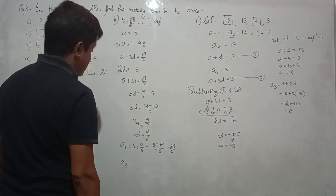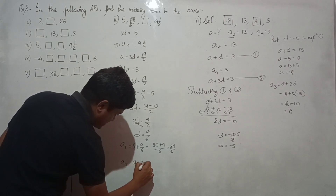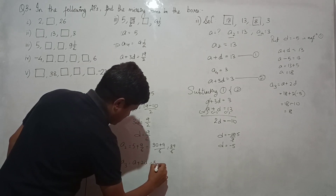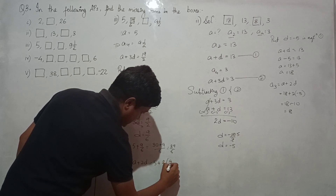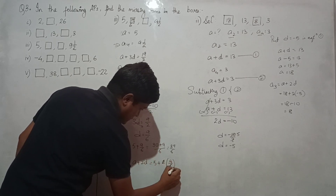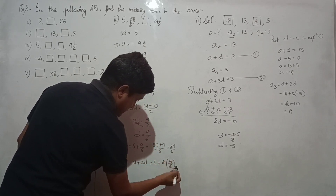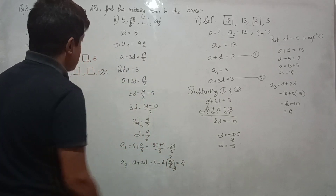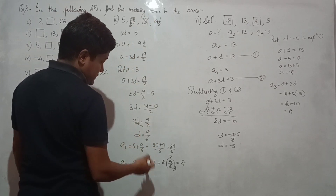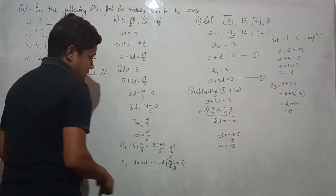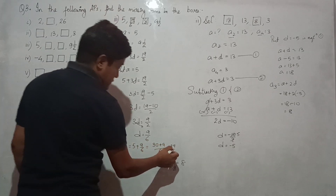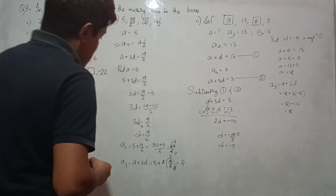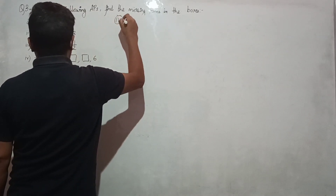The third term is a plus 2d: 5 plus 2 times 9 by 6 equals 5 plus 18 by 6 equals 5 plus 3, which is 8. So the two missing terms are 39 by 6 and 8. The final answer simplifies to give values like 13 by 2.